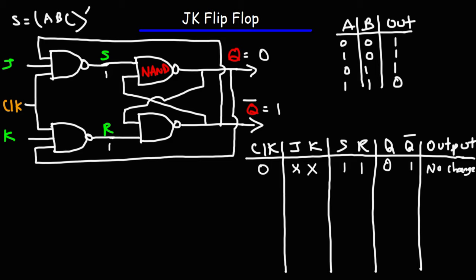So when we don't have an active clock signal, the output is not going to change. Whatever the values of Q and Q-bar at that instant, they remain regardless of whether you press J or K. The output can only change with an active clock signal. Now if we apply an active clock input but don't press J or K, because J is zero S will be one, and because K is zero R will be one. So S and R remain one and the circuit remains in a state of memory — no change.